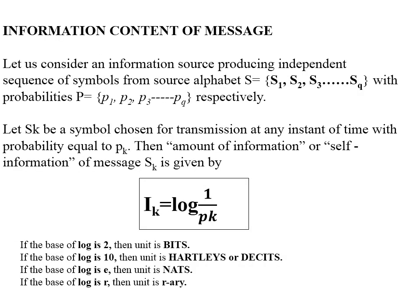As discussed earlier, let us consider an information source producing independent symbols from an alphabet S = {S1, S2, S3, ..., Sq} with respective probabilities P = {P1, P2, ..., Pq}. Let Sk be the symbol chosen for transmission at any instant of time with probability value Pk.